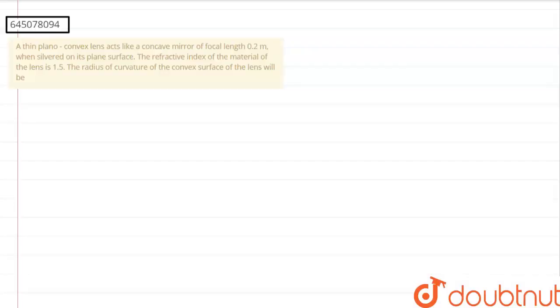The question says, a thin plano convex lens acts like a concave mirror of focal length 0.2 meters or 20 centimeters when it is silvered on its plane surface. The refractive index of the material of the lens is 1.5. We have to find the radius of curvature of the convex surface of the lens.